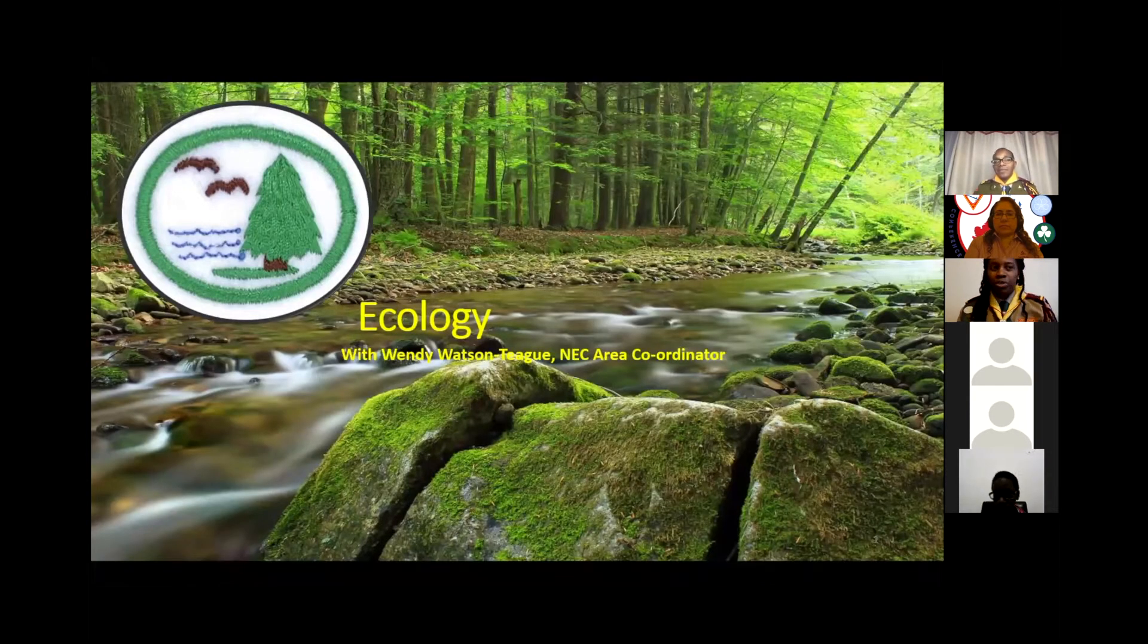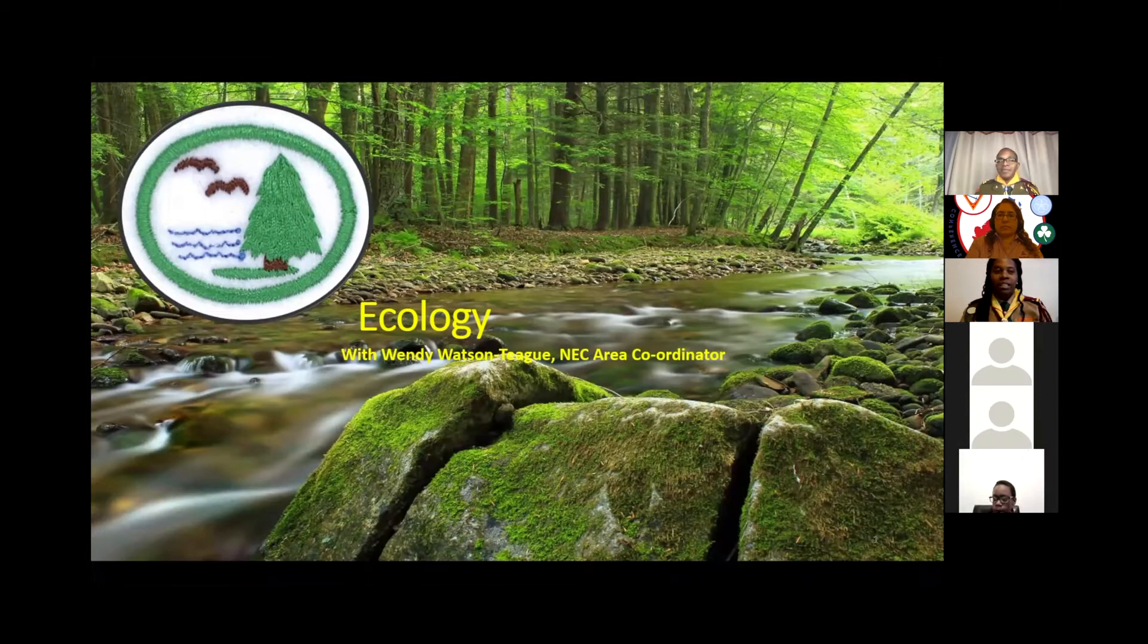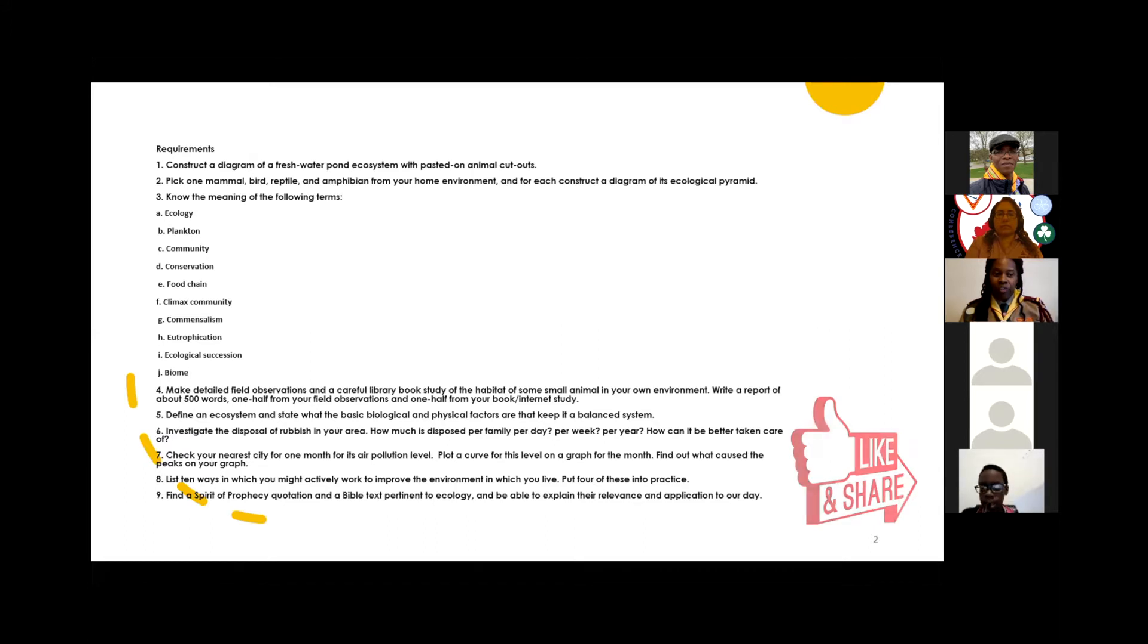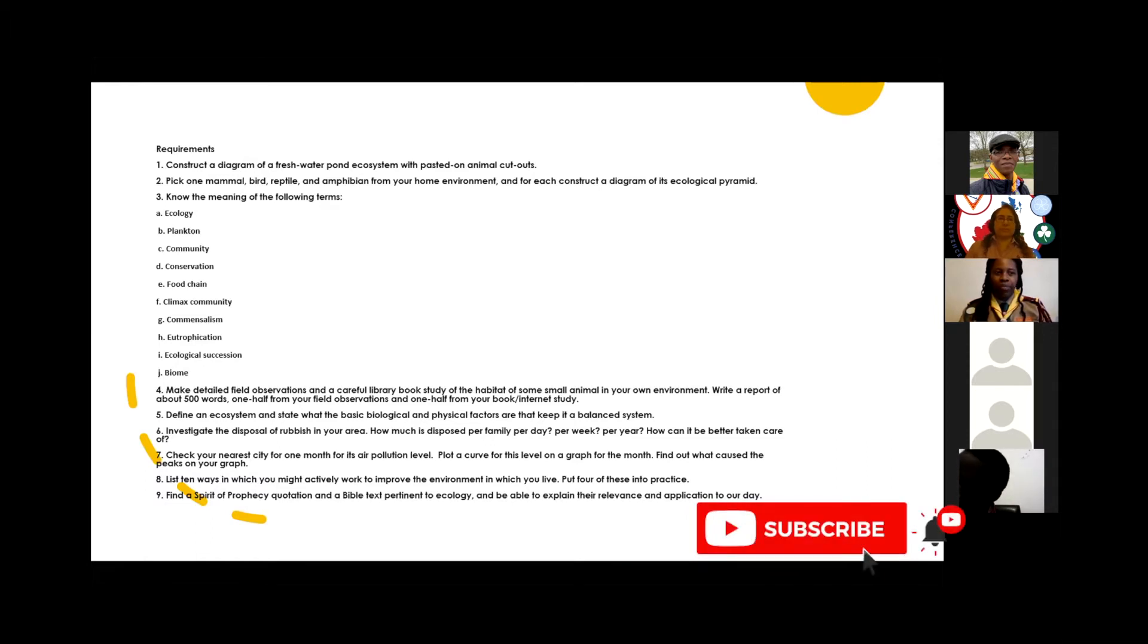This honor is one of two options available to those completing the guide curriculum. It's the level two honor, introduced in 1972, and deals with the world in which we live and what we can do to make our natural environment a better place to live. There are nine requirements to this honor. You're going to learn about ecosystems, ecological pyramids, and ecological terms such as community, ecology, food chains, conservation, ecological succession, and eutrophication. Then there's the hands-on parts, which include constructing a diagram of a freshwater pond ecosystem, observing an animal, monitoring big city pollutants, and helping improve our environment. Finally, we will reflect on what scriptures have to say about this subject.